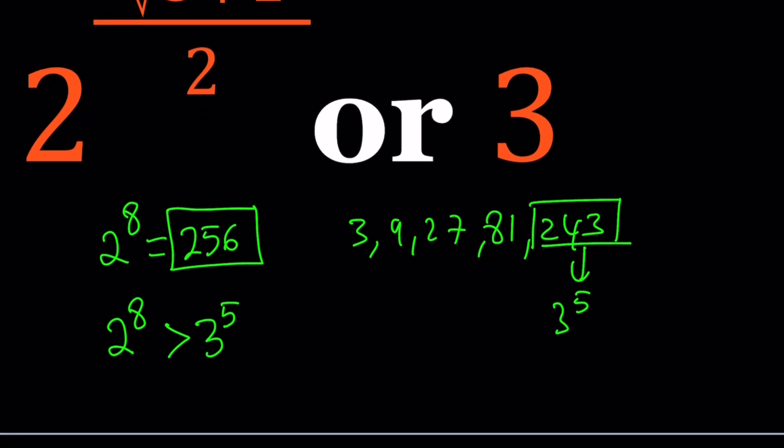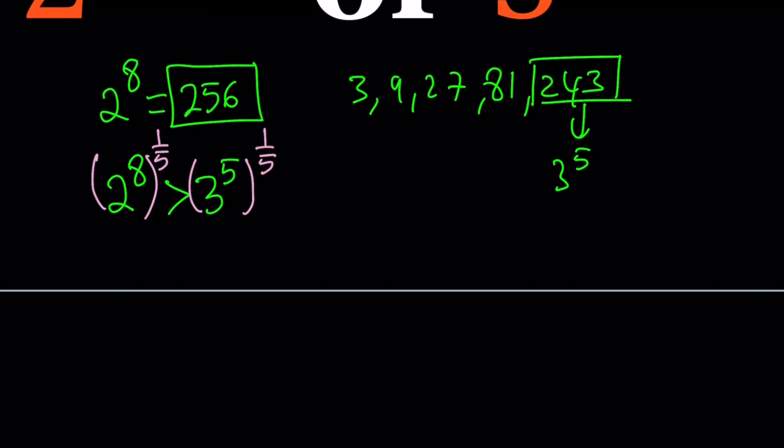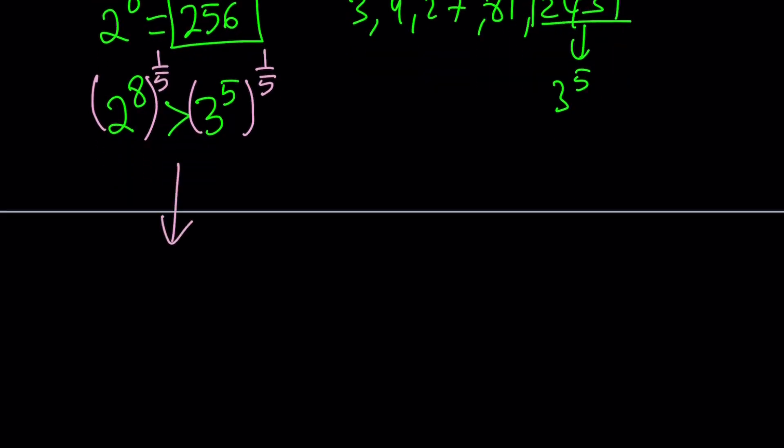First of all, I do need a 3. So let's go ahead and raise both sides to the power 1/5. Since both numbers are positive, we're taking the fifth root of both sides. From here, we get 2^(8/5) > 3. Awesome.